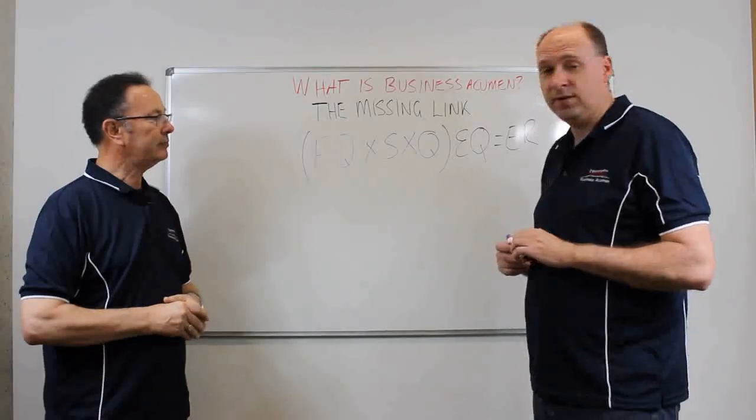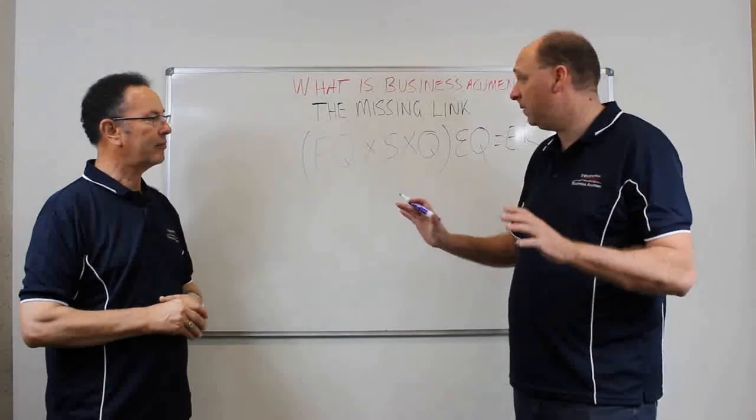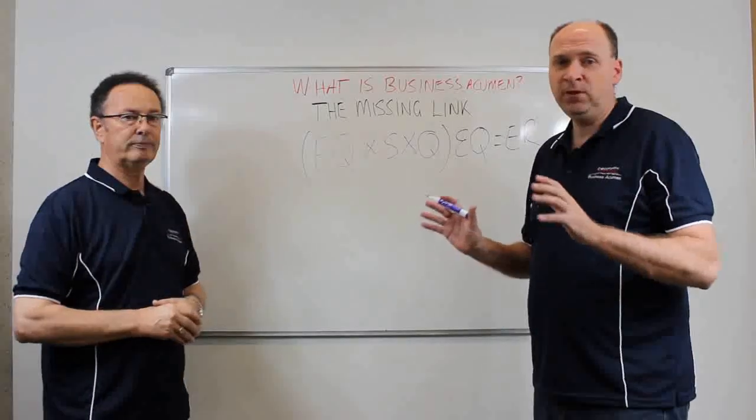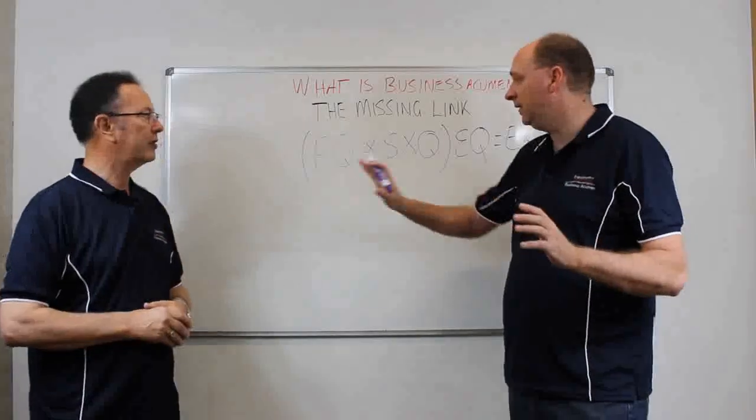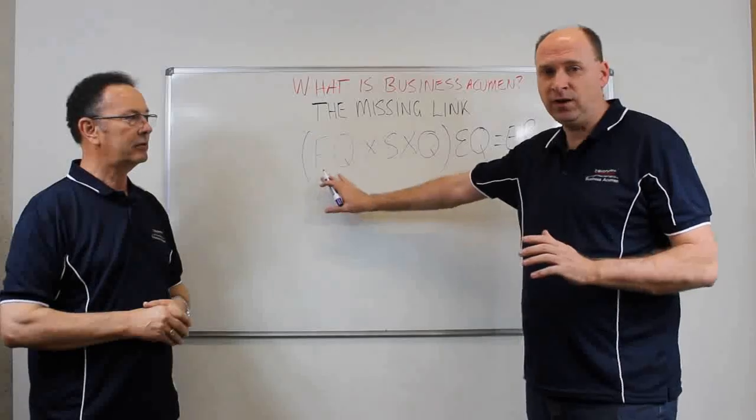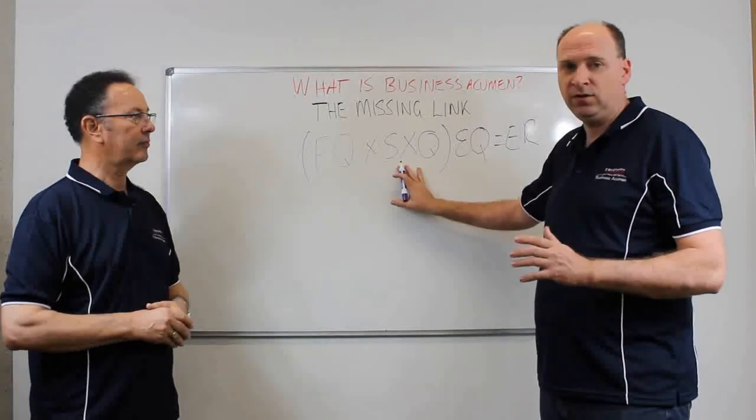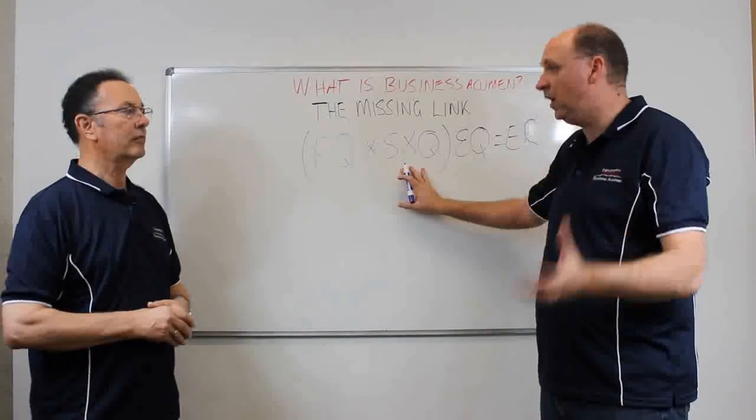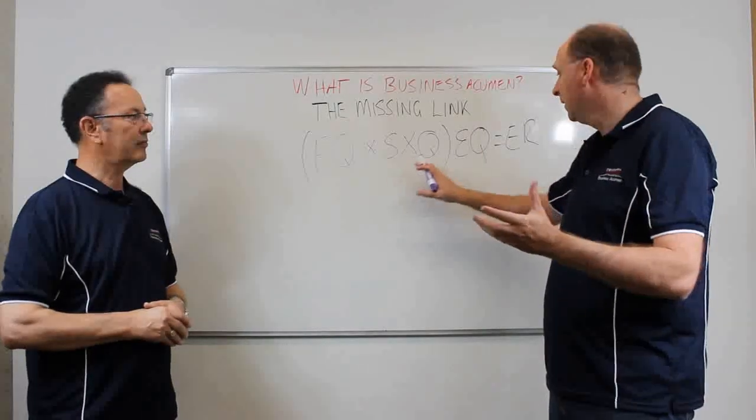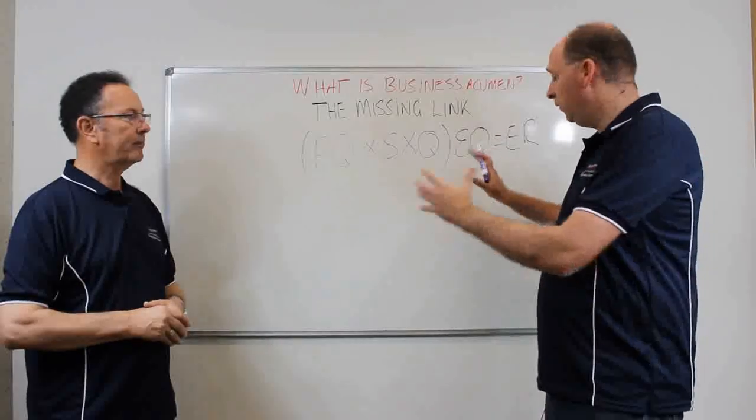That's a great summary, Daryl. So just to sum up, when we're talking about business acumen, what we're really talking about is your financial intelligence on knowing how your business makes money with your strategic execution, so executing within the strategy of the business, all within your worldview of your emotional intelligence, delivers extraordinary results.